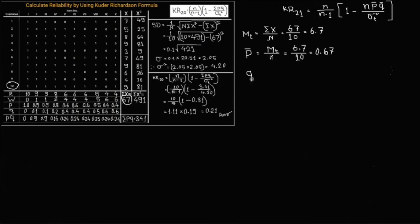Next, calculate q bar. Q bar equals 1 minus p bar, which equals 1 minus 0.67, which is 0.33. Now p bar and q bar: 0.67 into 0.33 equals 0.22.